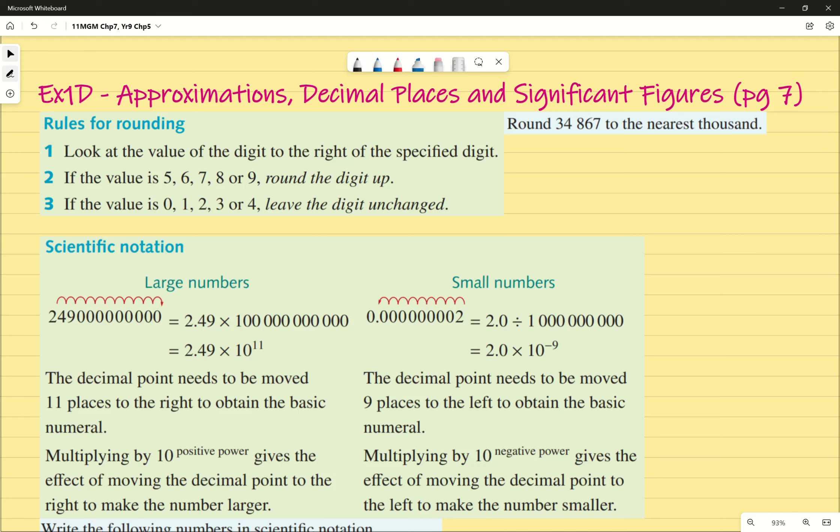For rounding, we look at the value of the digit to the right of the specified digit. If it's between 5 and 9, we round up. If it's between 0 or 4, we leave the digit unchanged, or in other words, we round down. I'm going to do one question, one example.